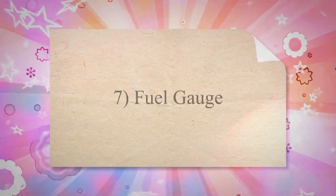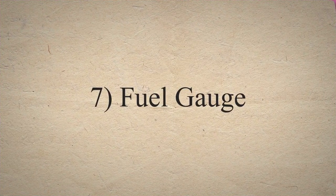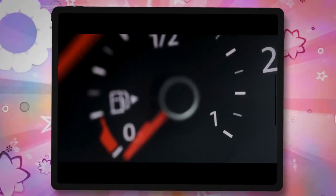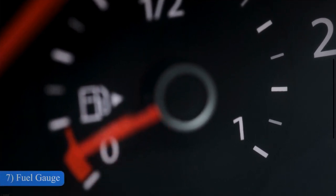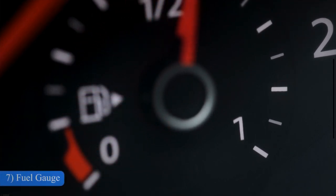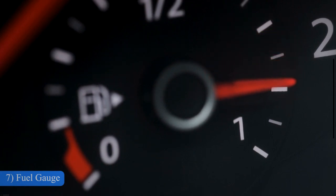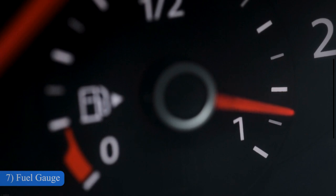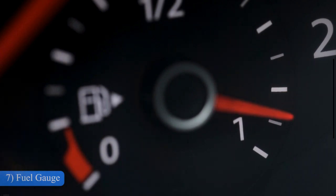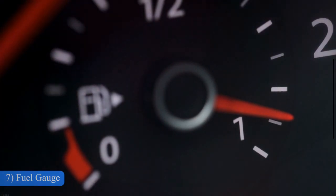7. Fuel Gauge. A fuel gauge is used to measure the fuel level in the fuel tank and shows this level on the car dashboard. It is also located on the dashboard of your car. The fuel gauge and speedometer are the best ideals for automobiles. In the early 20th century, they were available for standard equipment.